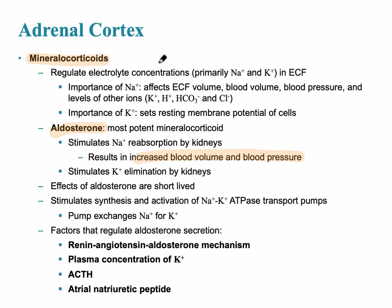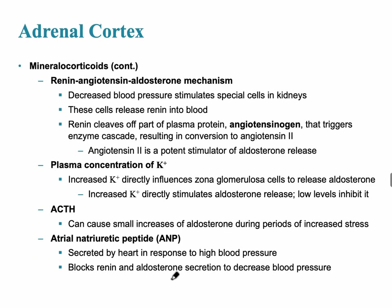Since sodium is so very important, there are other factors that also cause aldosterone to be released: the renin-angiotensin-aldosterone mechanism, plasma concentration levels of potassium (because potassium is inversely related to sodium), ACTH, and atrial natriuretic peptide (ANP). Decreased blood pressure can also activate aldosterone release, as can elevated plasma potassium concentration. The one hormone that antagonizes aldosterone is atrial natriuretic peptide.